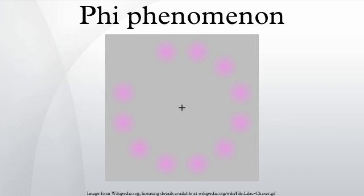The Phi Phenomenon is similar to beta movement in that both cause a sensation of movement. However, the Phi Phenomenon is an apparent movement caused by luminous impulses in sequence, whereas beta movement is an apparent movement caused by luminous stationary impulses.